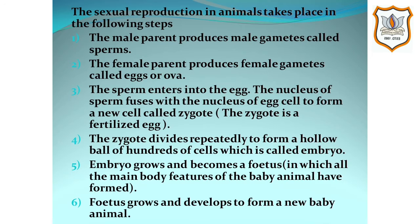The zygote is a fertilized egg. The zygote divides repeatedly to form a hollow ball of hundreds of cells which is called embryo. Embryo grows and becomes a fetus. Fetus means one in which all the main body features of the baby animal have formed. Fetus grows and develops to form a new baby animal.